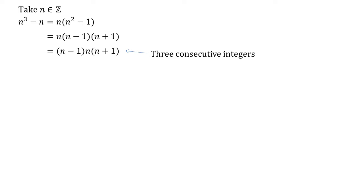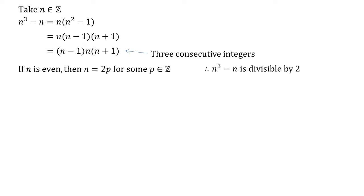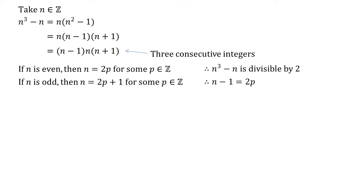Starting with the multiples of 2: n itself is either going to be an even number, in which case n equals 2p for some integer p. If it's equal to 2p it's divisible by 2, hence our n cubed minus n is also divisible by 2 because it has n as a factor. Otherwise n would have to be odd, so n equals 2p plus 1 for some p in the integers. But then n minus 1 equals 2p. Since n minus 1 is also a factor of our expression and is divisible by 2, n cubed minus n is divisible by 2. So we've shown that our expression will always be divisible by 2.